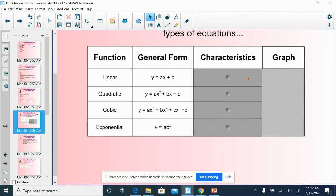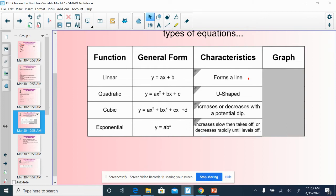Linear equations form a line. Quadratics are u-shaped. Cubics increase or decrease with a potential dip. Basically, they're either going to start low and move high but might dip once, or start up high and move low with a potential increase once. Exponential equations, you should understand given coronavirus, things start off slowly and increase really quickly.